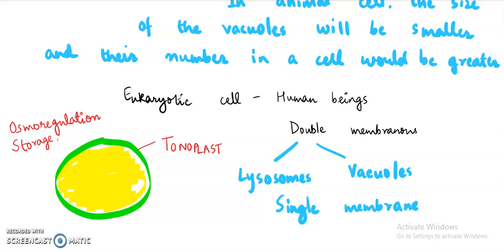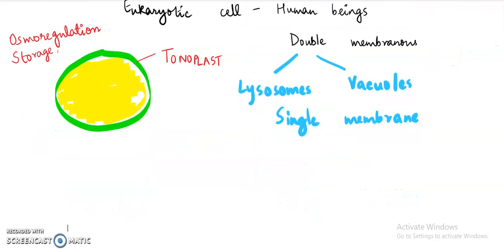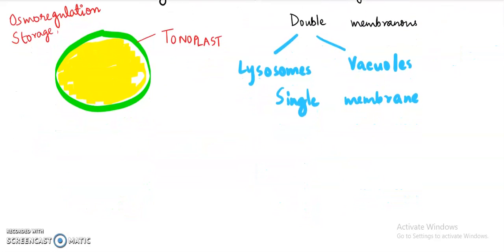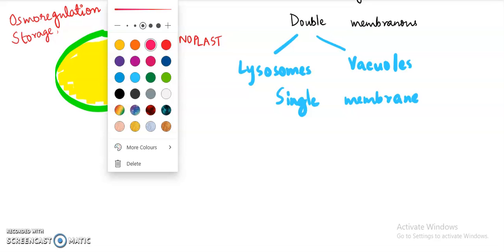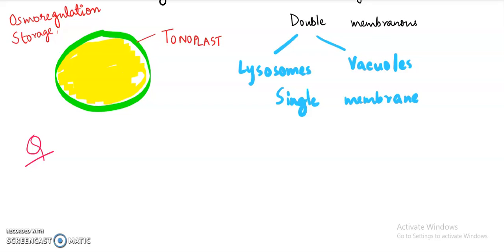This is all regarding the vacuole. Only this much you should know and the point of difference between the plant cell and the animal cell vacuole is important. Now my question for this video is does vacuoles help in locomotion? Locomotion is changing your position from one place to another. You need to pick up either true or false as an answer to this question.